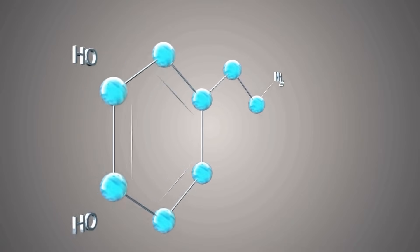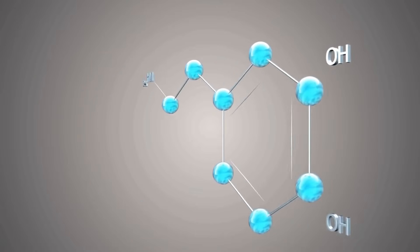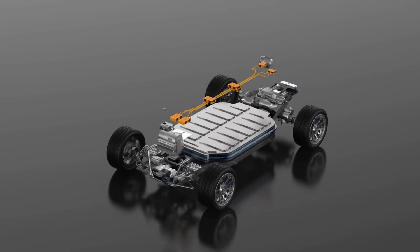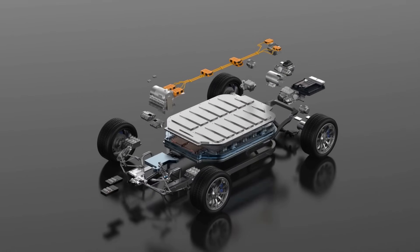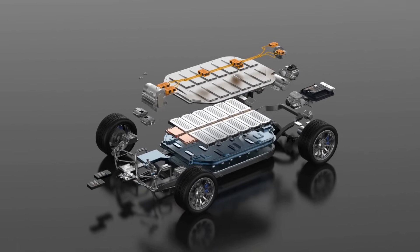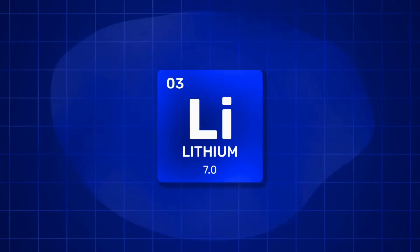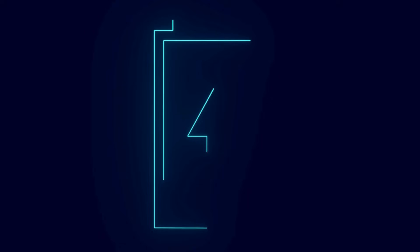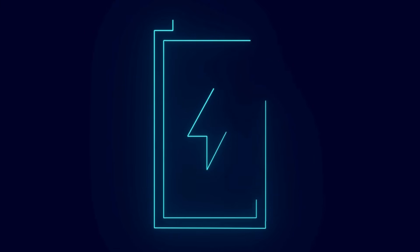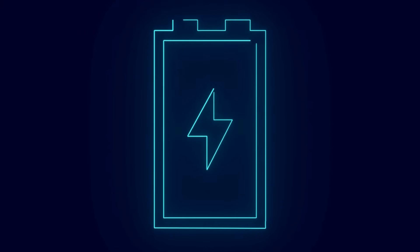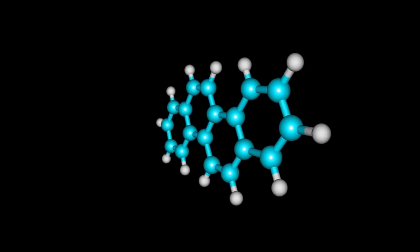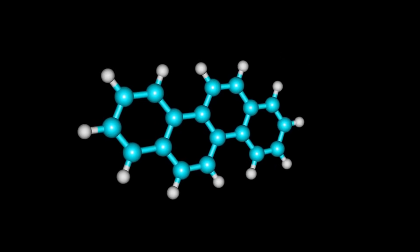One of the most promising applications is the discovery of new chemical compounds. Take, for example, the lithium-ion battery, which is widely used today. It relies on specific compounds containing lithium. Now imagine we want to create a new type of battery that holds more charge and charges much faster. To achieve this, we would need to discover a completely new chemical compound.